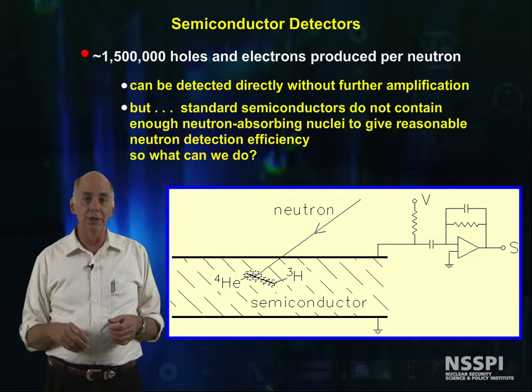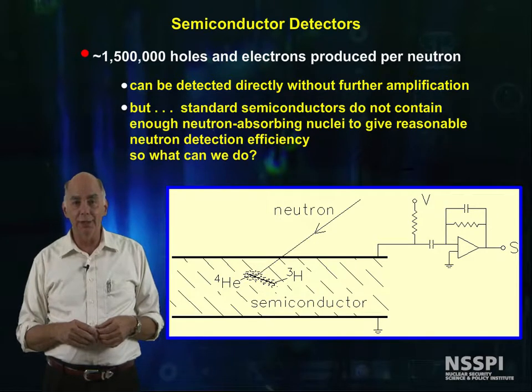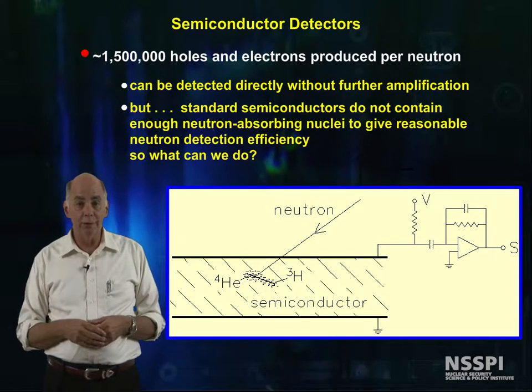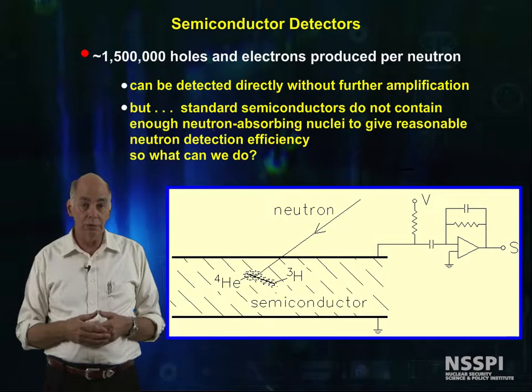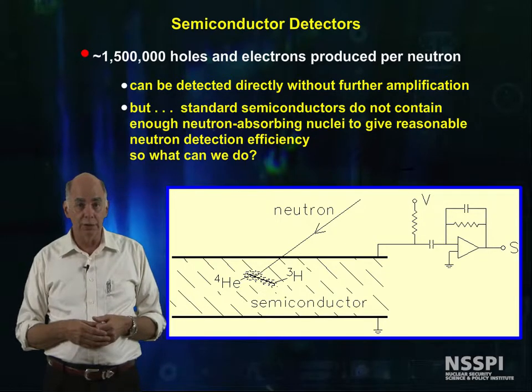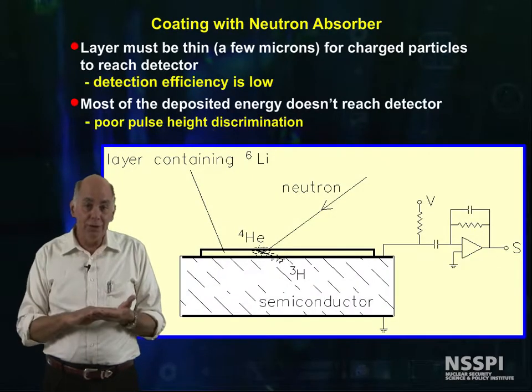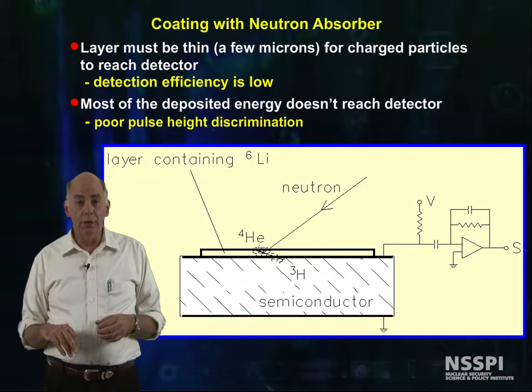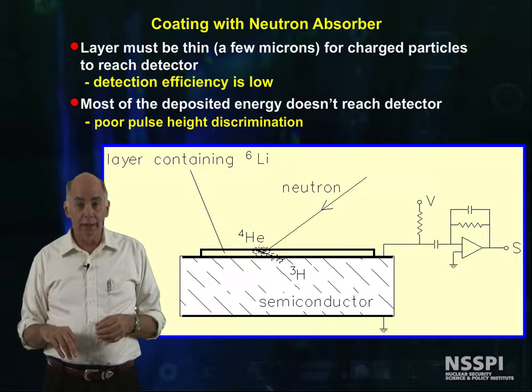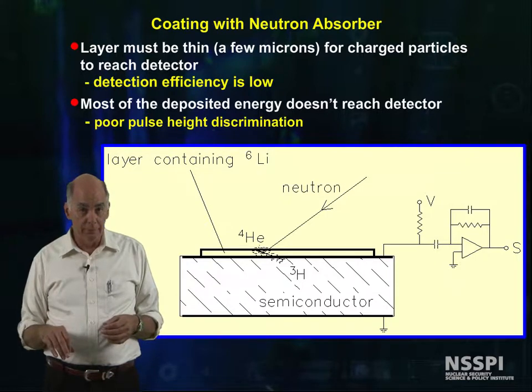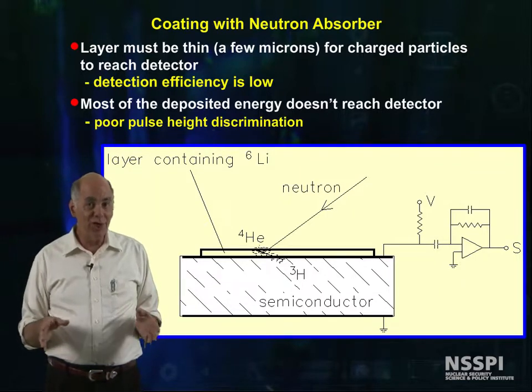The bad news is that standard semiconductors don't contain enough neutron-absorbing nuclei to give a reasonable neutron efficiency. So what do you think we do? We can add a neutron absorber on the top. The bad news is this absorber can only be a few microns thick, so that the detector efficiency is still relatively low. Our work here is not done, but this concept shows great promise.